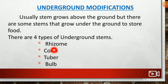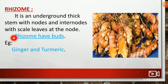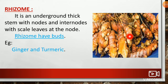The four types are: rhizome, corm, tuber, and bulb. First type — rhizome: it is an underground thick stem with nodes and internodes with scale leaves at the node. Rhizomes have buds. For example, ginger and turmeric.